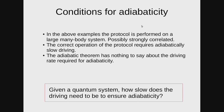Let me briefly summarize what we've seen. In all these examples, the protocols are performed on large many-body systems. Some of them can be strongly correlated; some do not have to be. The correct operation of the protocol requires adiabaticity — the actual state of the system does not deviate from the instantaneous ground state. The adiabaticity theorem tells us that it is possible to achieve adiabaticity, but it has nothing to say about the conditions for adiabaticity — how slowly I need to drive the system. From the experimental and practical point of view, this is an extremely important question. The key question is: how slowly do we need to drive a quantum system to achieve adiabatic conditions?